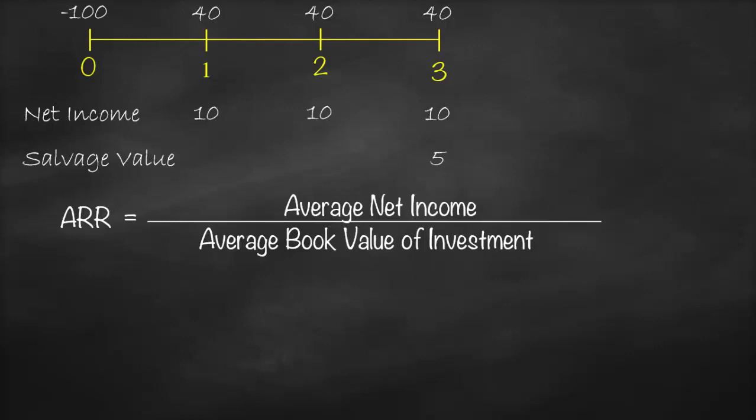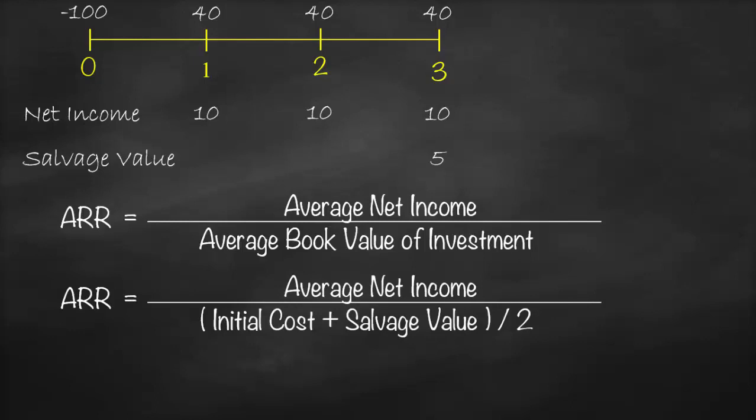How do we calculate average book value of investment? Average book value of investment is calculated as initial cost plus salvage value, all of them divided by two, which means get the average of initial cost and salvage value.